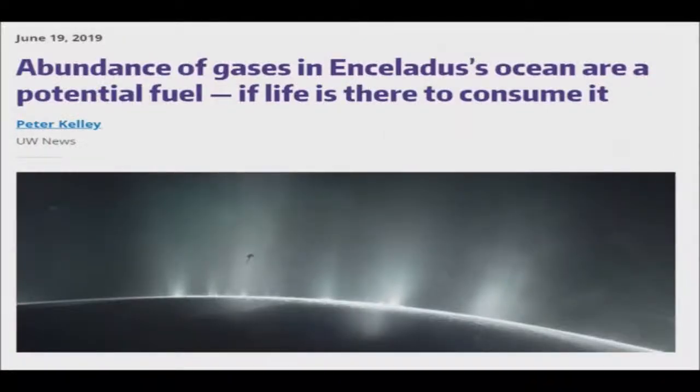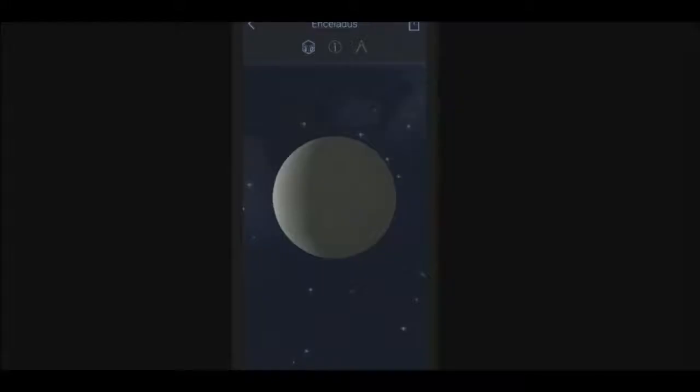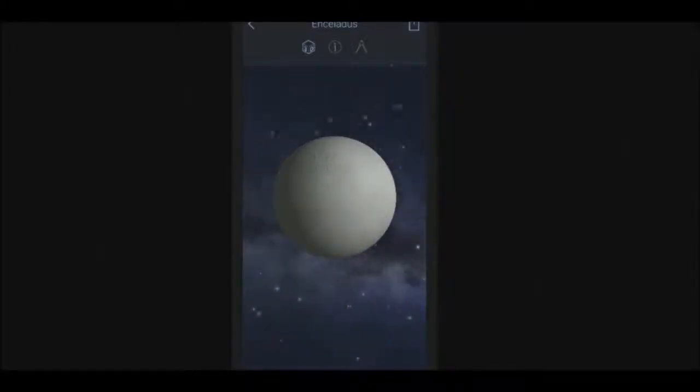Until now, the subterranean oceans of Saturn's moon Enceladus were thought to be harsh and utterly unsustainable for life. But now a closer look reveals that the oceans likely have a similar temperature, salt content, and acidity as our oceans here on Earth.